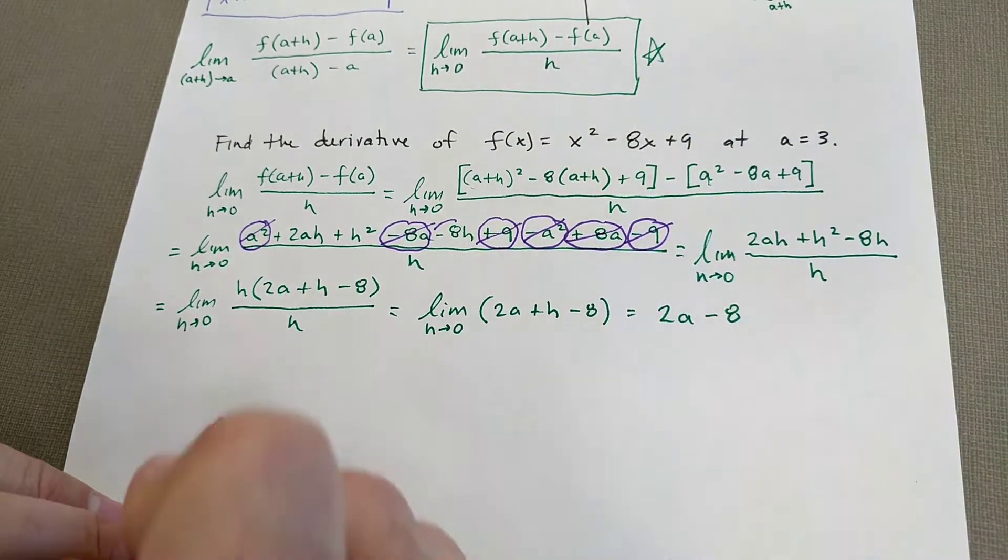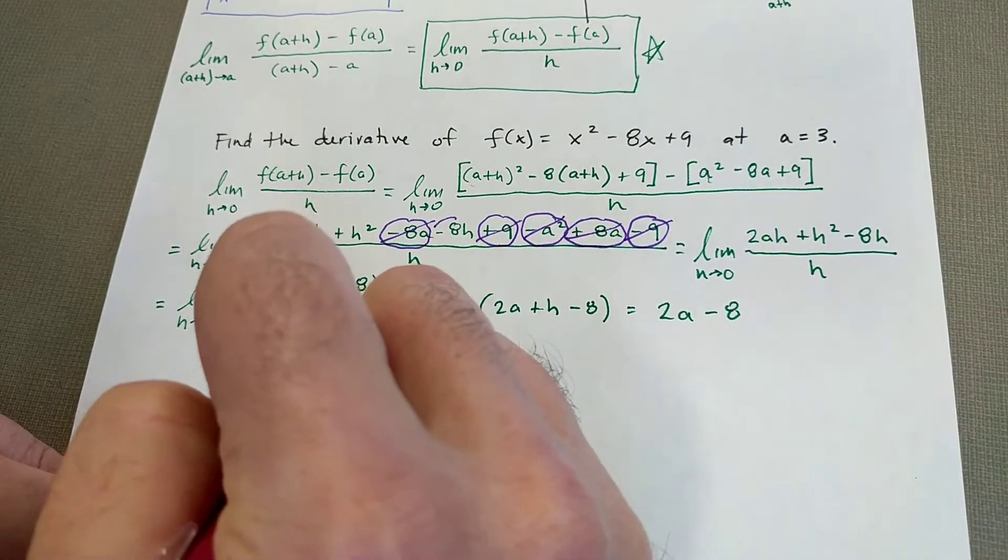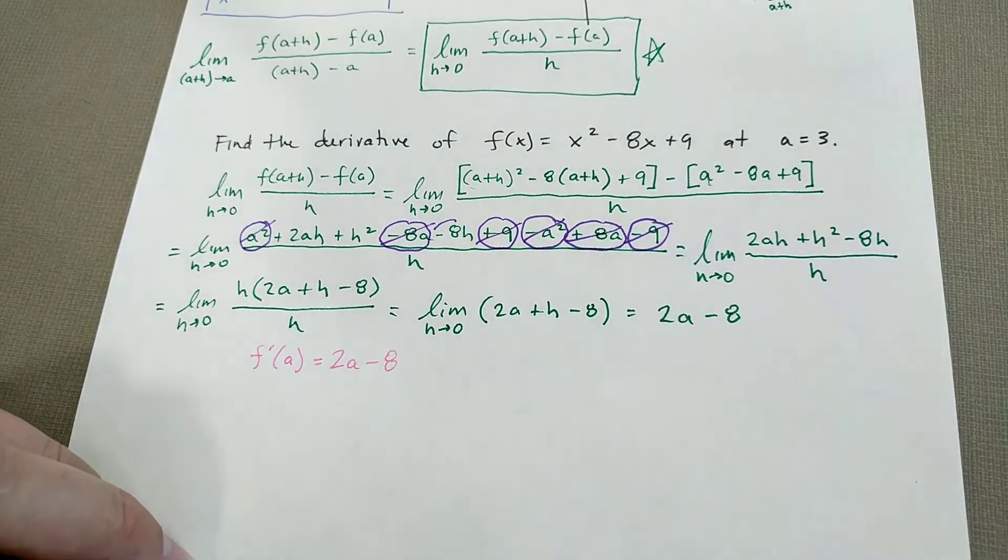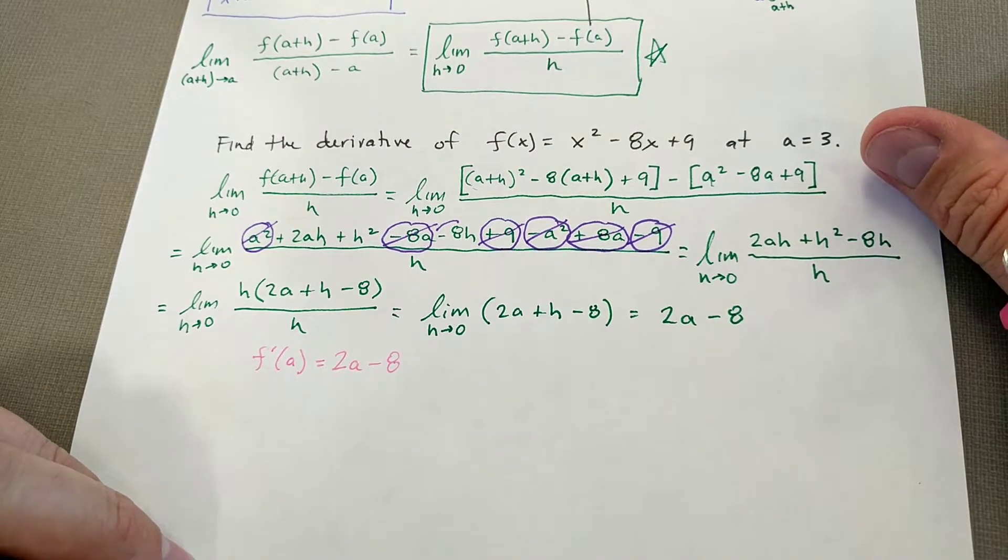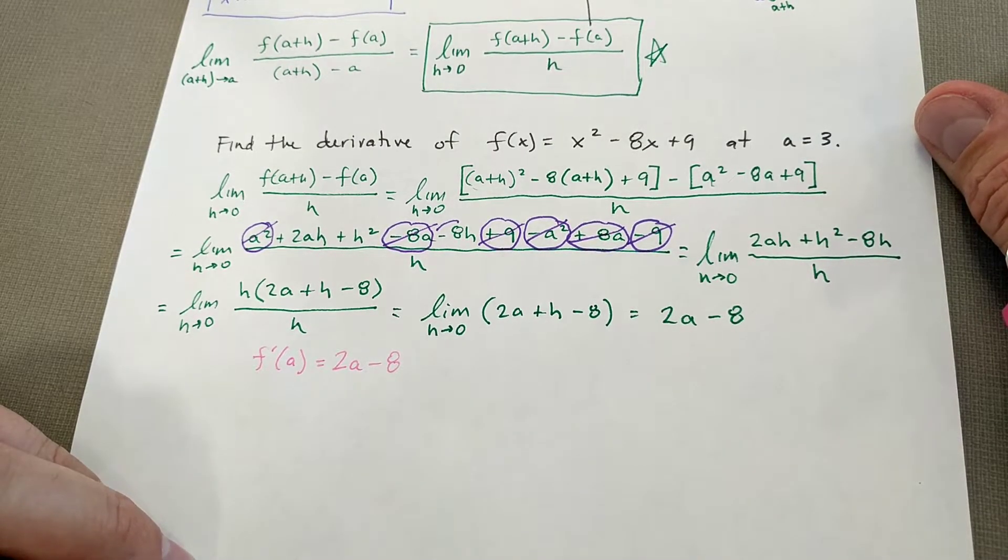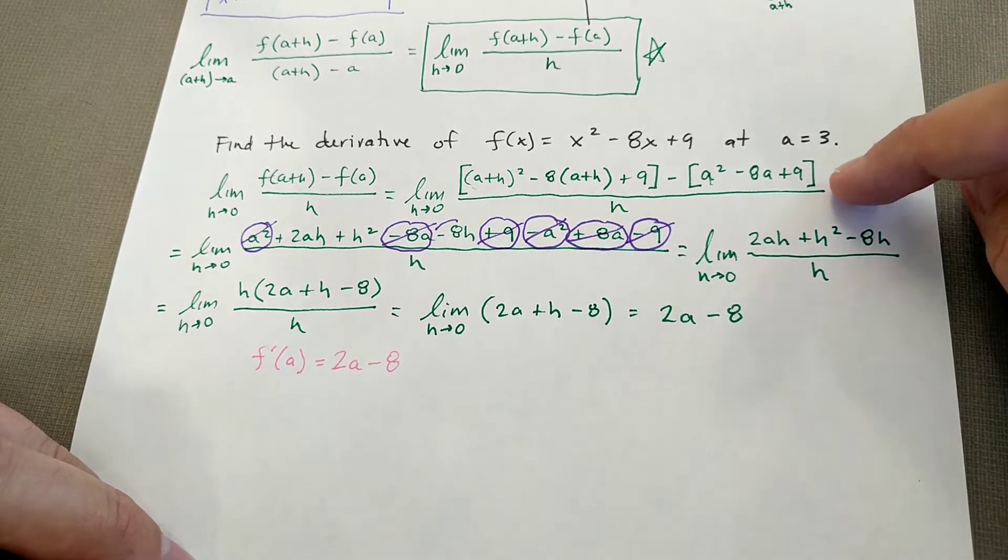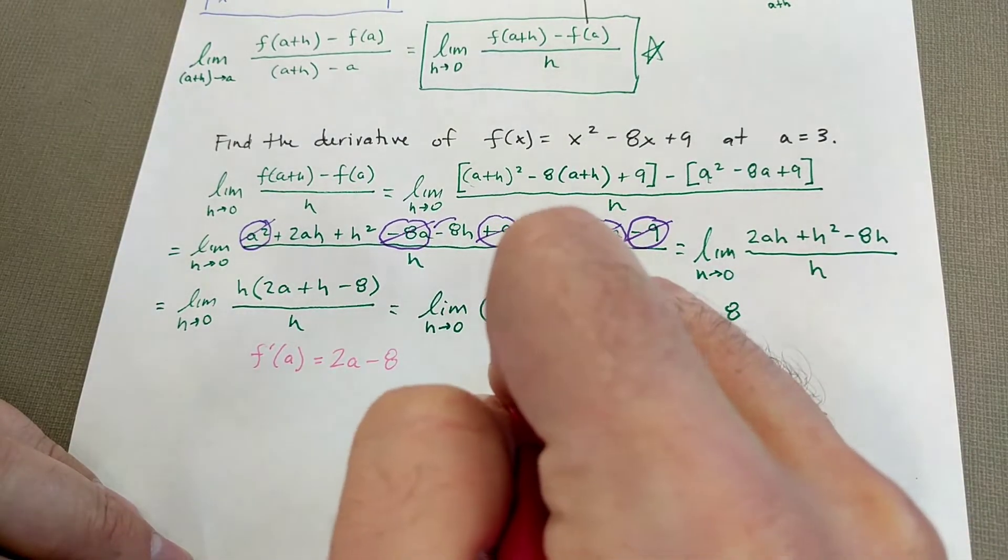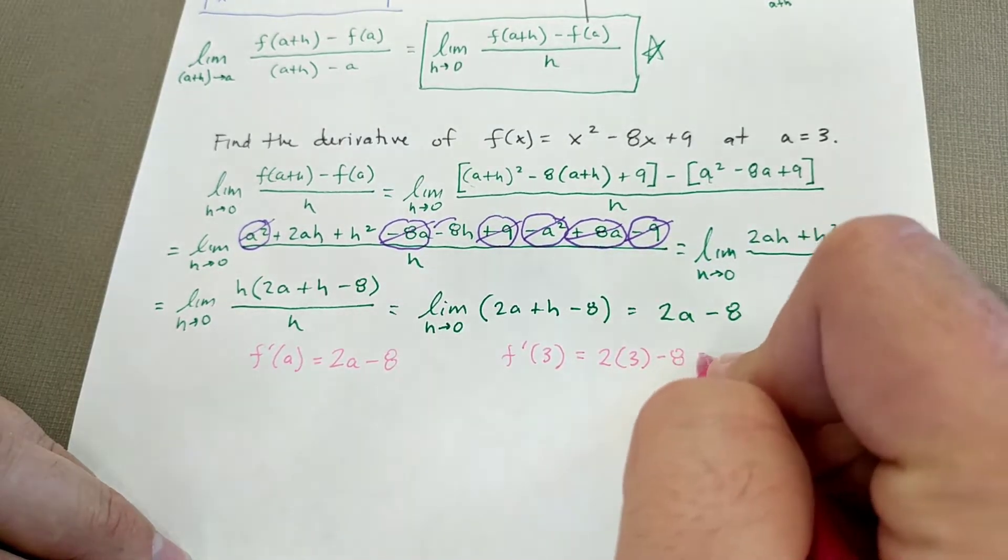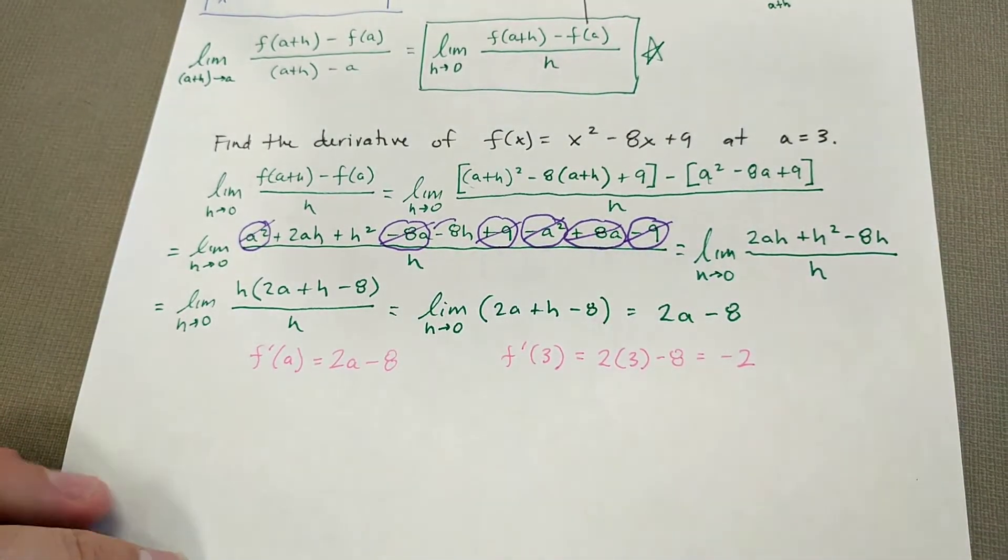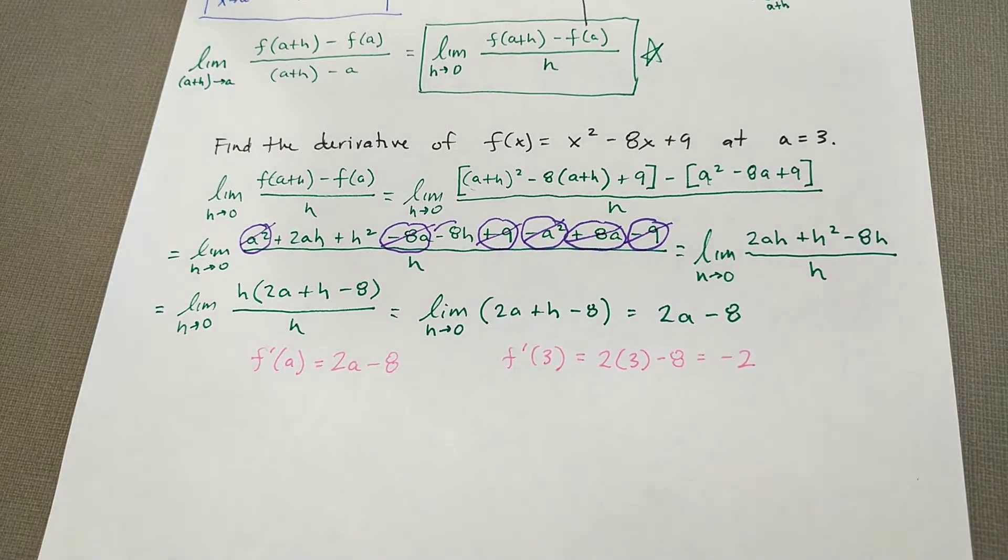So in conclusion, F prime of A is equal to 2A minus 8. This is a formula that will find the instantaneous rate of change or the slope of the tangent line at any point along the parabola. This particular problem asked for 3. So let's go ahead and just find F prime of 3 real quick. So that's 2 times 3 minus 8, which gets us negative 2. So that is using the H formula.